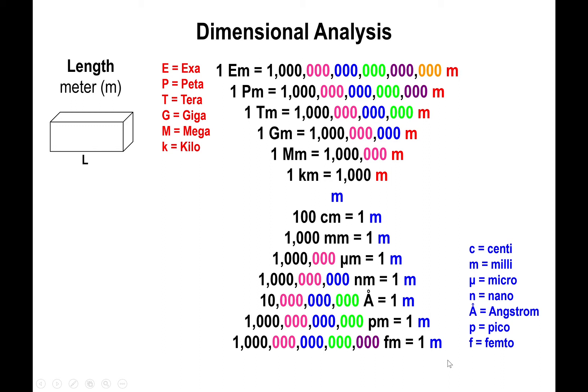Writing all these zeros can be a rather annoying task when switching from one unit to another. So instead, we can rewrite all the numbers by counting how many zeros they have. For example, one million has six zeros. Instead of writing all the zeros out, we can rewrite the number as 10 to the power of however many zeros it has — so one million becomes 10 to the sixth.